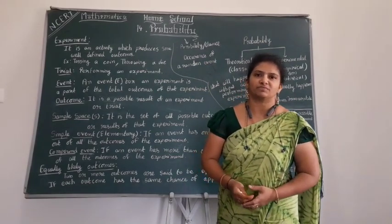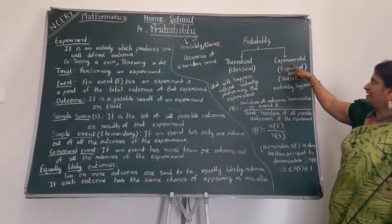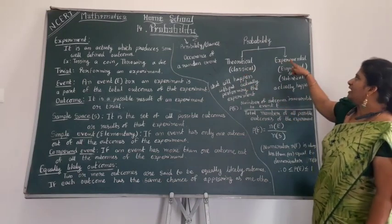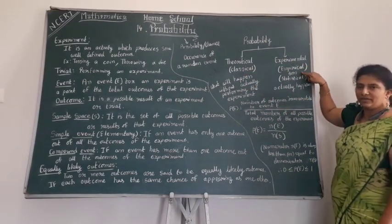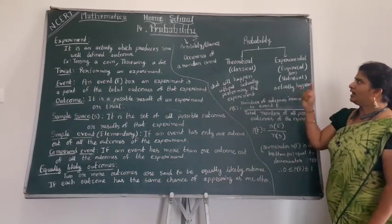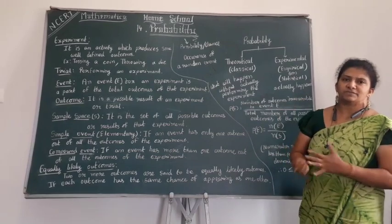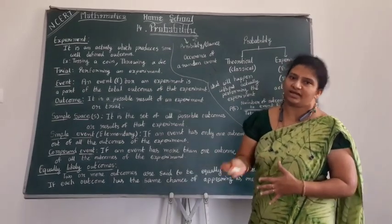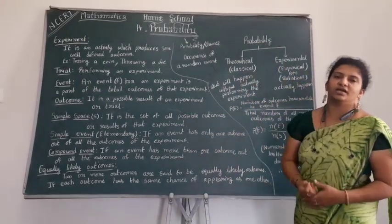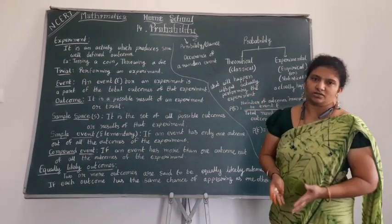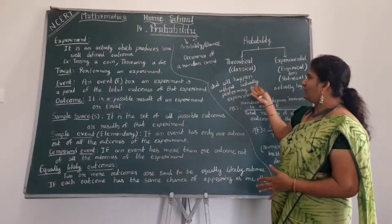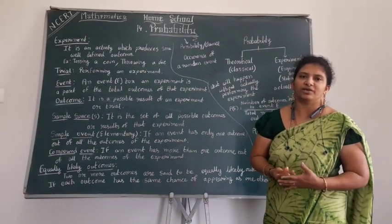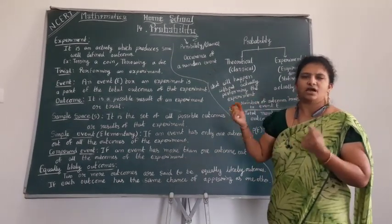Probability is classified into two types: theoretical probability and experimental probability. Theoretical probability is also called classical probability. Experimental probability is also called empirical or statistical probability. In experimental probability, we do the experiments and get the actual result. Whereas in theoretical probability, there is no need to do any attempt — we assume or guess the result without actually performing the experiment.